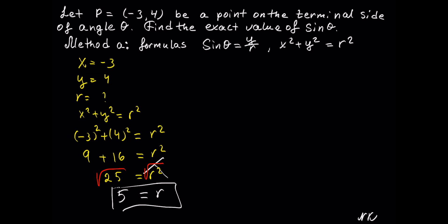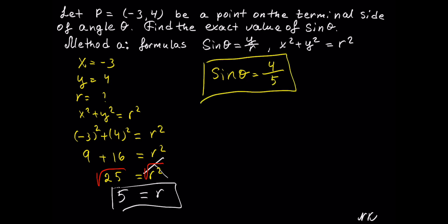Now we can use this information to solve for sine of theta, which is equal to y divided by r. y is equal to 4, and r is equal to 5. So sine of theta is 4 over 5.